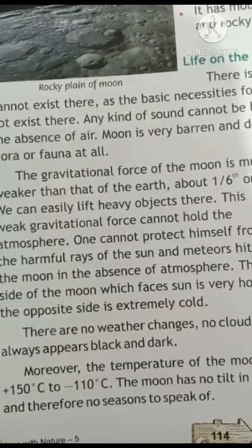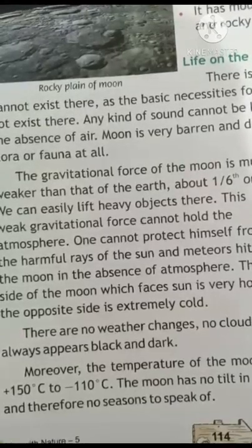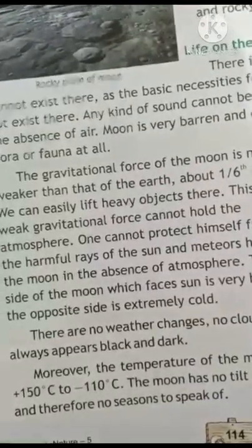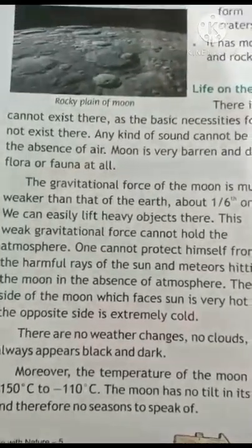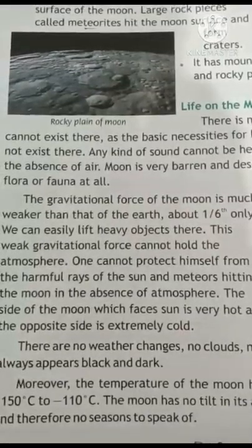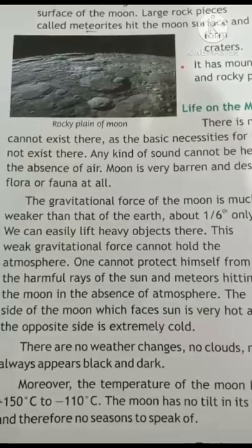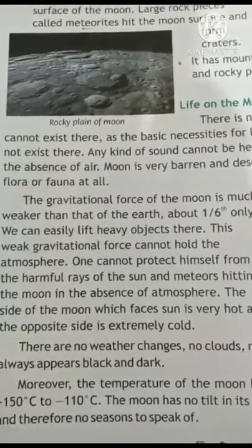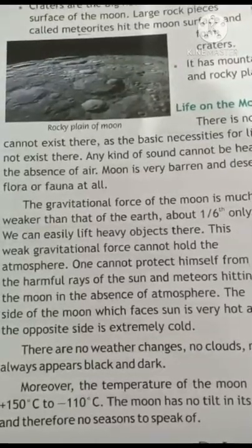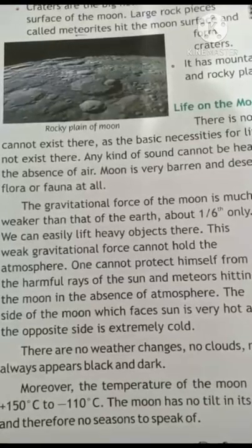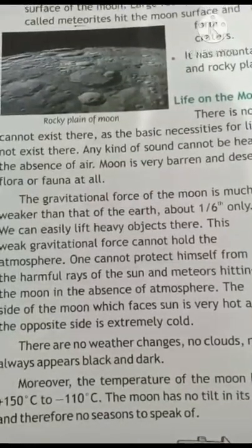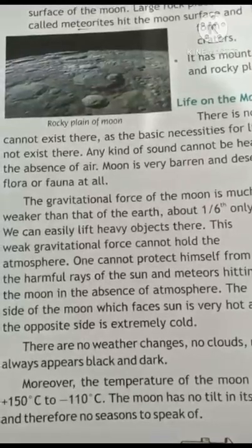The gravitational force of the moon is much weaker than that of the Earth. Yani ki jo moon ka gravitational force hota hai, wo Earth se bahut weak hota hai — kam zor hota hai. You all know that Earth's gravitational force is very strong; this is why Earth pulls every object toward itself.